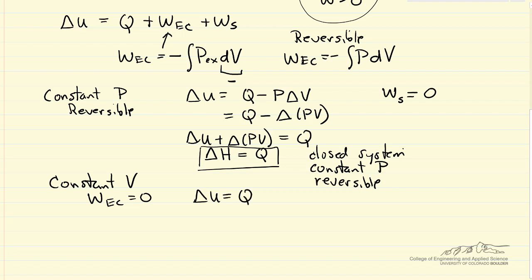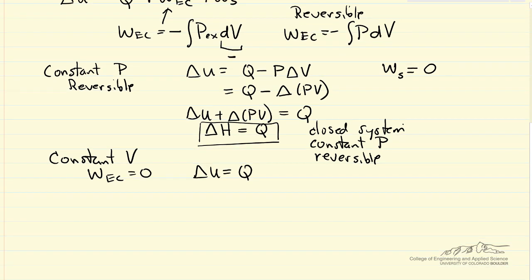Now let's look at both of these cases. For constant pressure, if we had an ideal gas, delta H is Cp delta T, constant heat capacity, ideal gas, Cp delta T is equal to Q. Here, if we have an ideal gas delta U, it's Cv delta T is equal to Q.